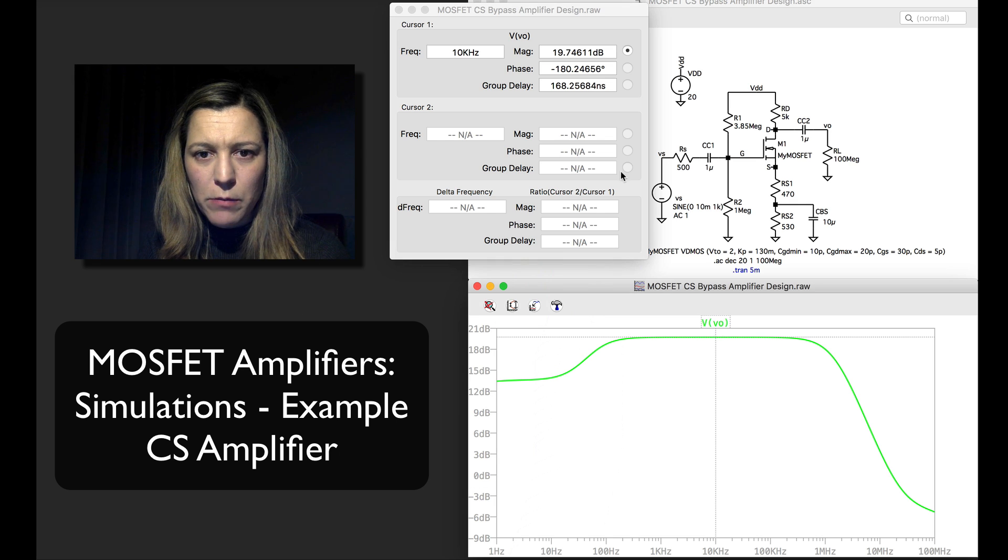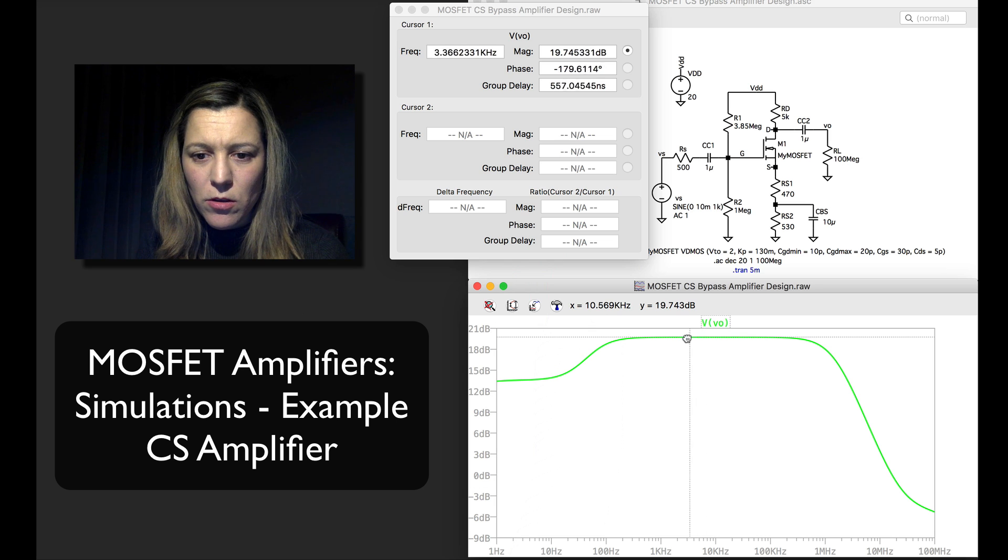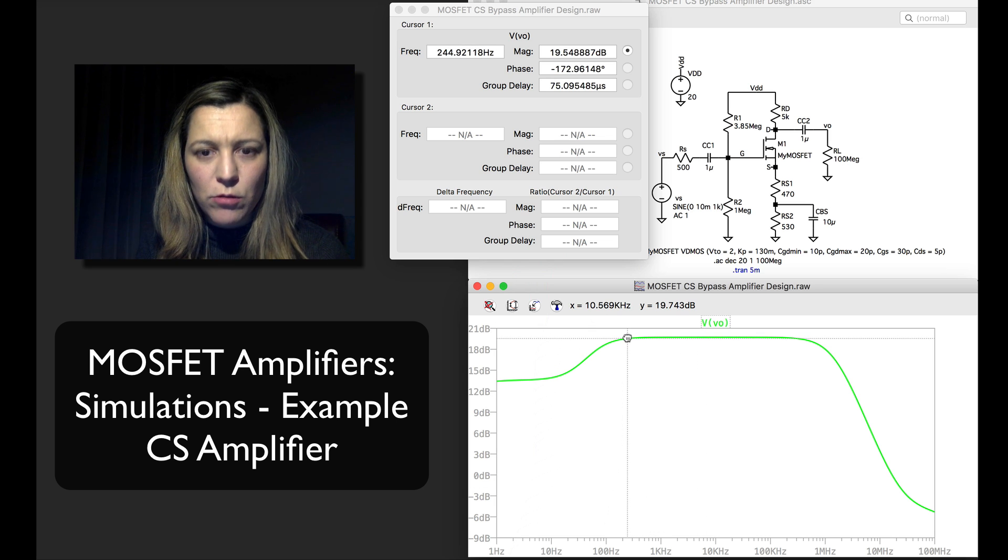I'm going to move it. This is my magnitude is 20 dB, so 19.7, so close enough to 20. And so I'm going to try to look for the point where I have 3 dB below that, so 16.7.